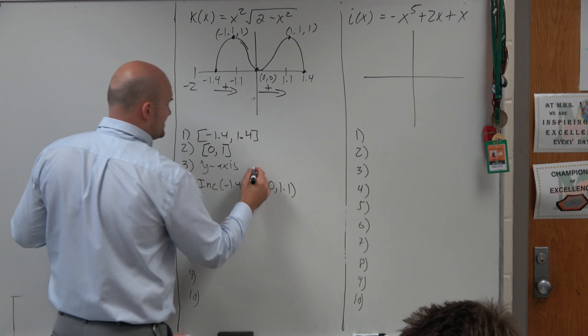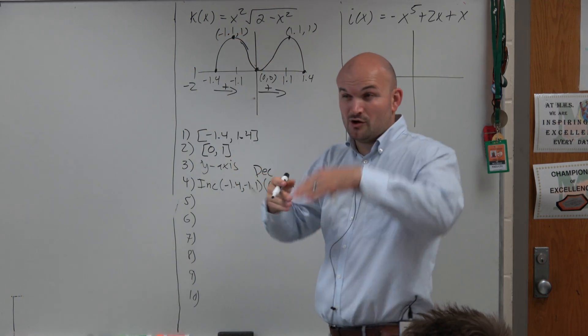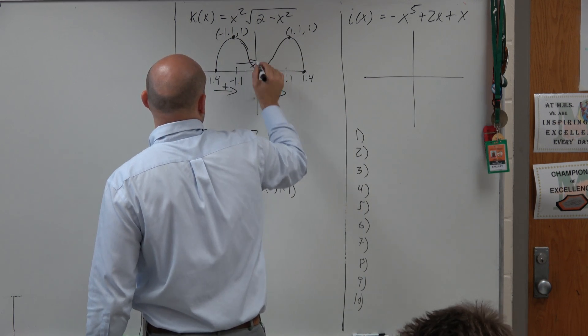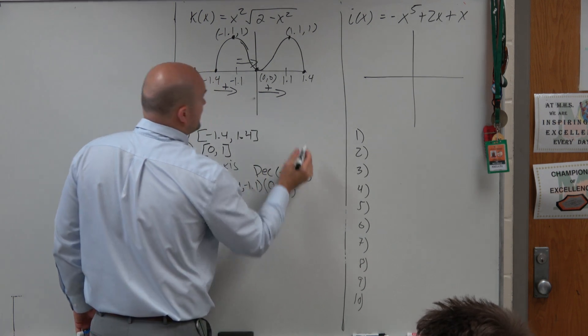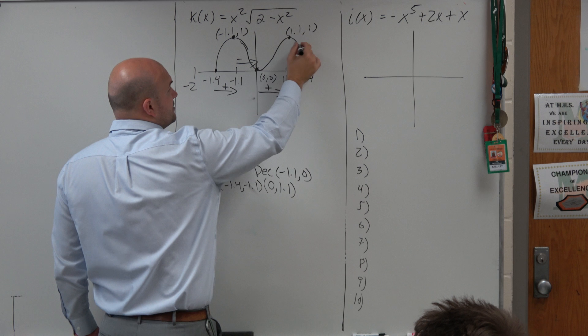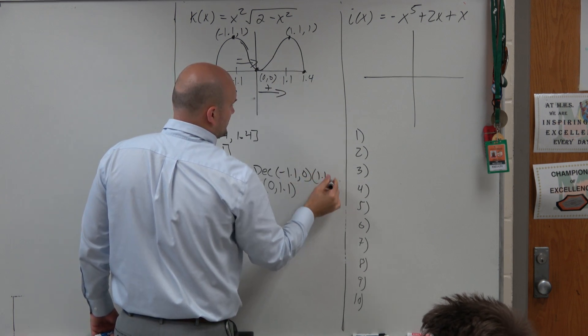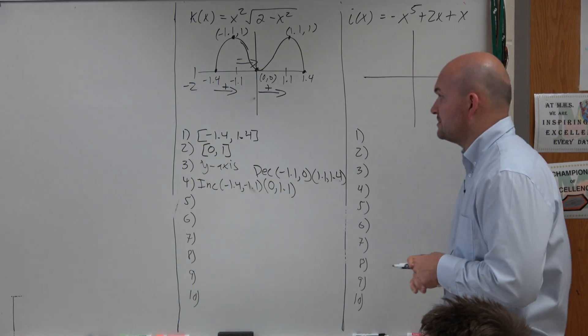The graph is decreasing. I'm just going to put that up here. You guys can see the graph is going down, or the height is going down from negative 1.1 to 0, as well as, when people aren't talking from 1.1 to 1.4. Because I definitely don't want people to get this wrong on a test or quiz. Right? So we want to make sure we're all good.